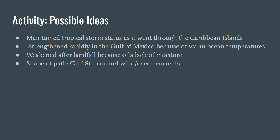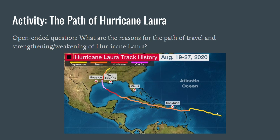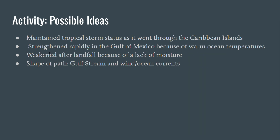Here are some ideas to explain the hurricane's path. It started as a tropical storm and maintained its status as it went through the Caribbean islands. It then strengthened rapidly in the Gulf of Mexico because of warm ocean temperatures, and weakened after landfall because of a lack of moisture.